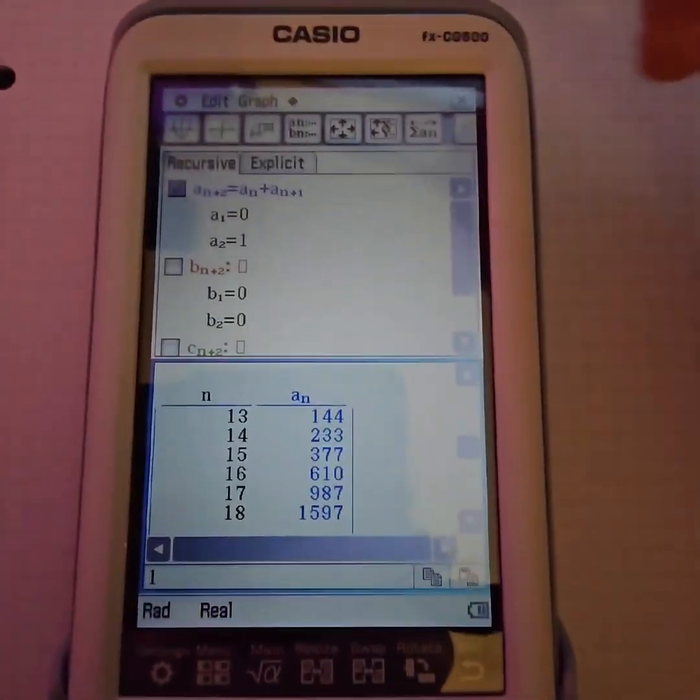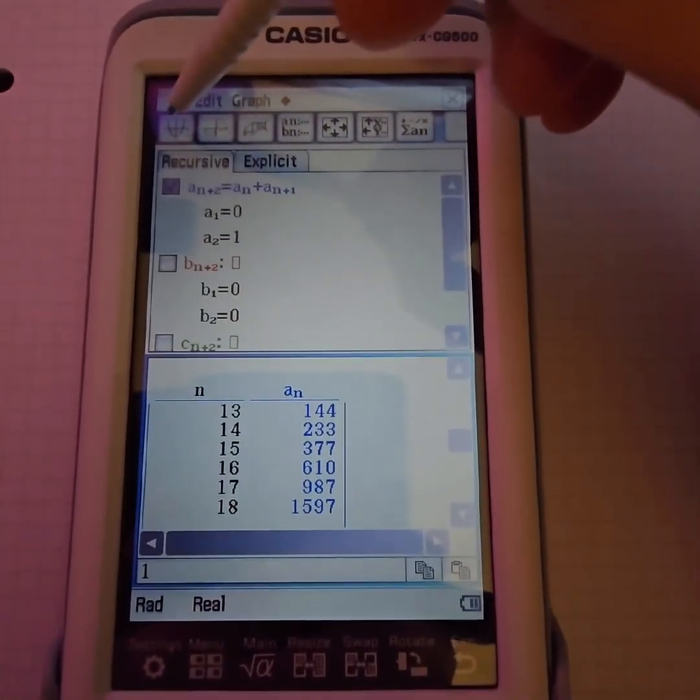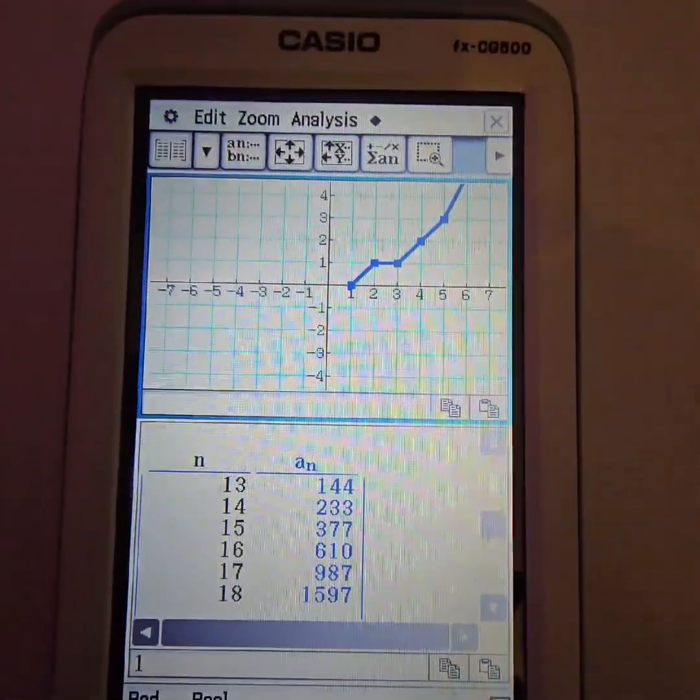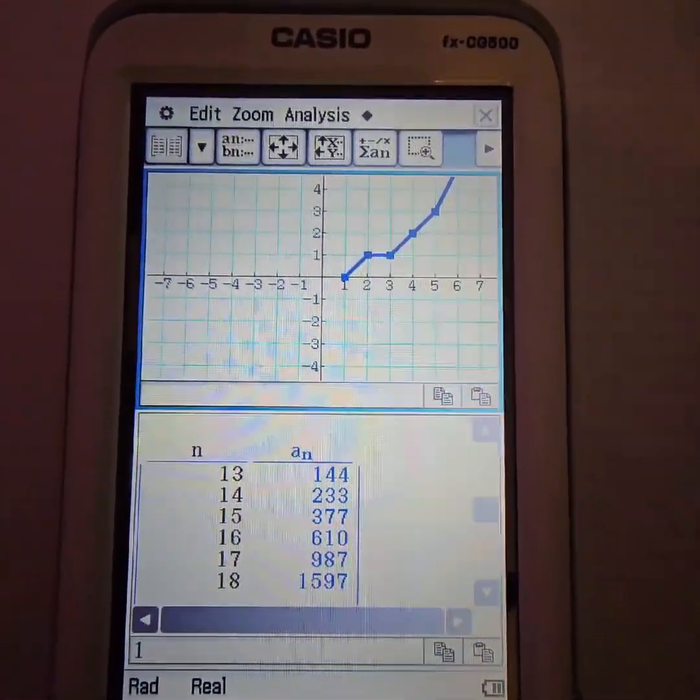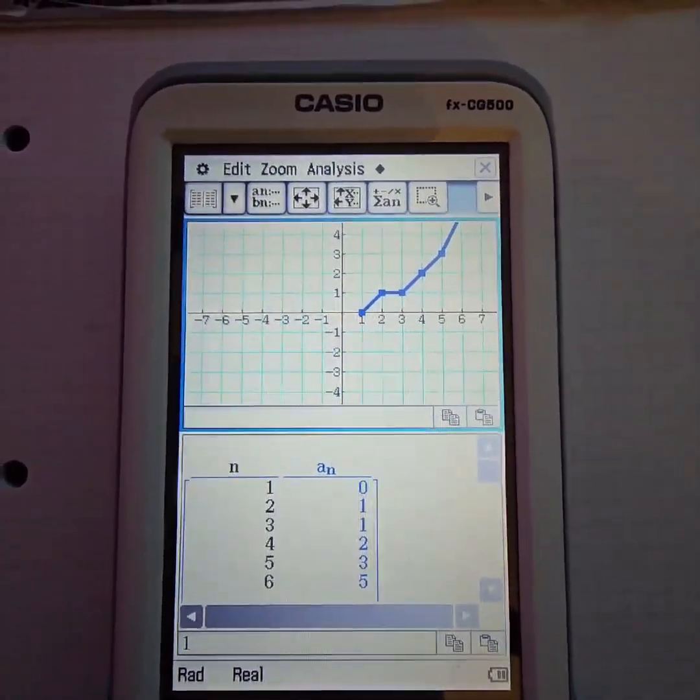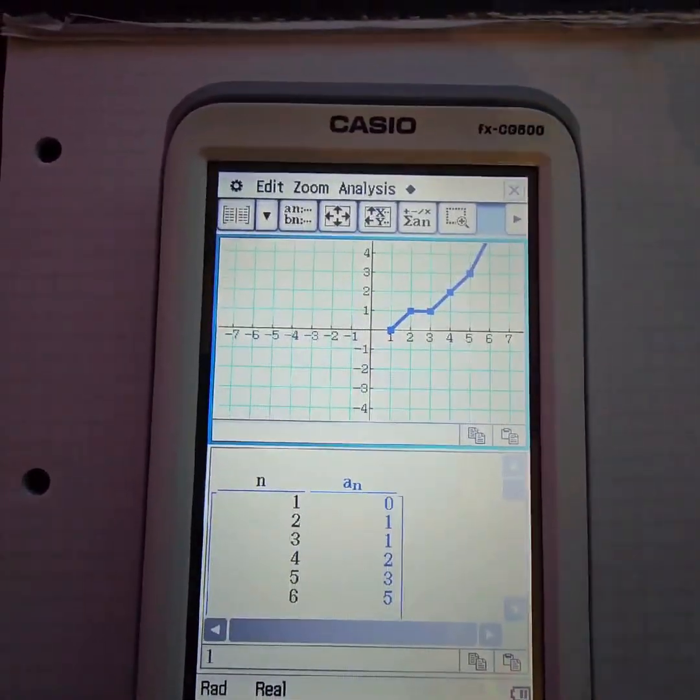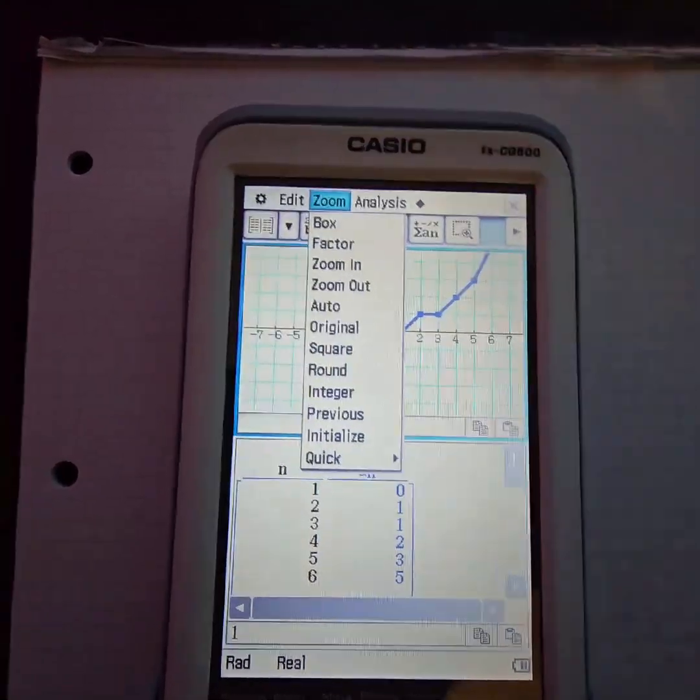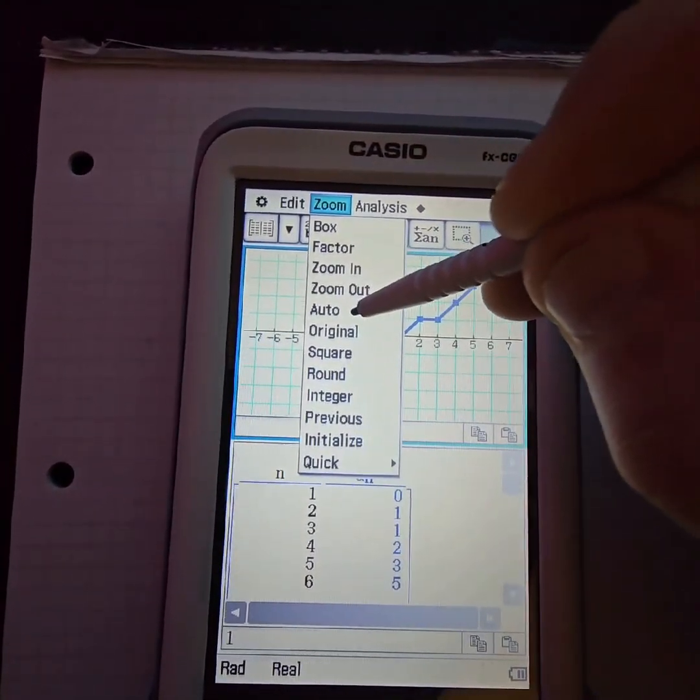Now, to graph this sequence you simply click on this graph option over here and you generate this graph. Unfortunately, this graph doesn't look too good so let's squash it. We do that by clicking on Zoom and then selecting Auto.